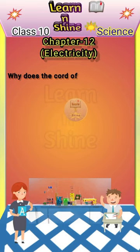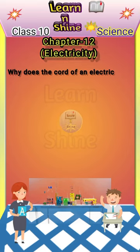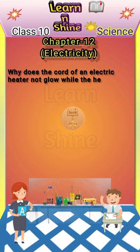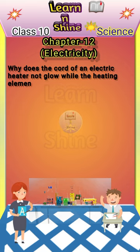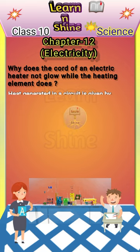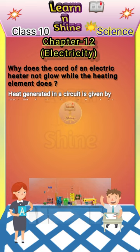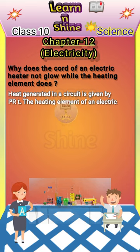Why does the cord of an electric heater not glow while the heating element does? Heat generated in a circuit is given by I²RT.